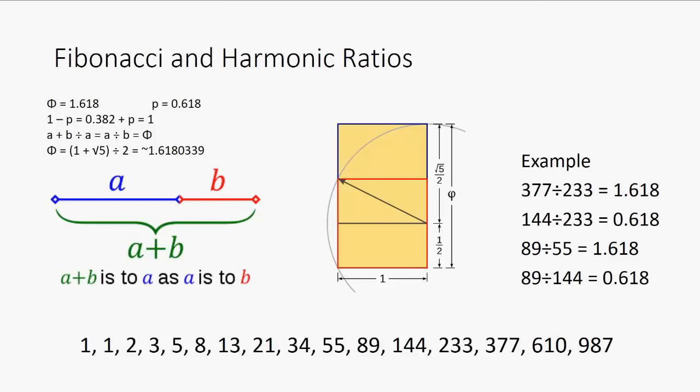Let's talk about Leonardo Fibonacci. He was an Italian mathematician born in 1170 AD who modelled the population growth of rabbits. This is now called the Fibonacci sequence — a sequence of numbers: 1, 1, 2, 3, 5, 8, 13, 21, 34, and so on. Basically, each successive number is the sum of the previous two numbers. So 1 and 1 equals 2, 1 and 2 equals 3, 2 and 3 equals 5, 3 and 5 equals 8, and so on.